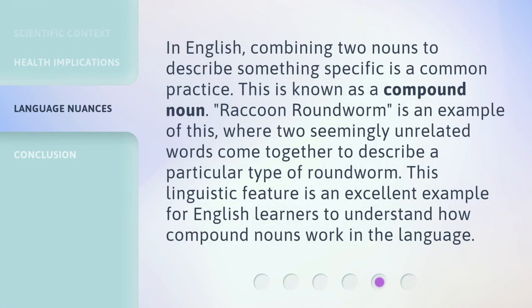In English, combining two nouns to describe something specific is a common practice. This is known as a compound noun. Raccoon roundworm is an example of this, where two seemingly unrelated words come together to describe a particular type of roundworm. This linguistic feature is an excellent example for English learners to understand how compound nouns work in the language.